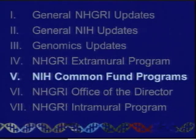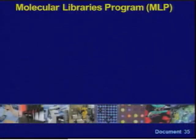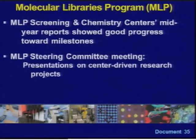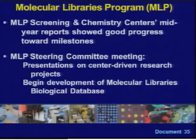Moving to updates for relevant NIH Common Fund programs, starting with the Molecular Libraries Program: the program holds back 25% of each center's annual award for release based on demonstrated progress at the mid-year point towards year-end milestones, and the four NHGRI-managed centers demonstrated good to excellent progress towards all milestones this year. The November MLP Steering Committee meeting featured individual presentations on center-driven research projects. A key topic was development of a next-generation database to advance chemical biology data and analysis beyond what PubChem currently provides; this Molecular Libraries Biological Database will be supported through grant supplements to several MLP centers. The COMP program came to an end in September, with no-cost extensions for wind-down activities.